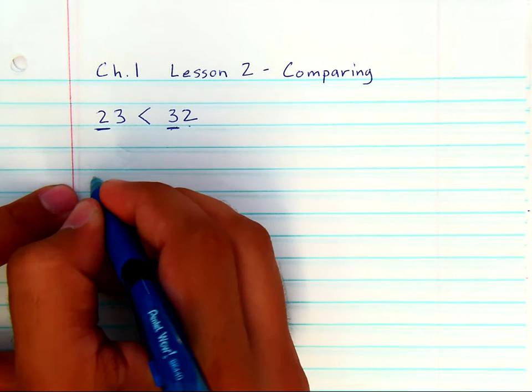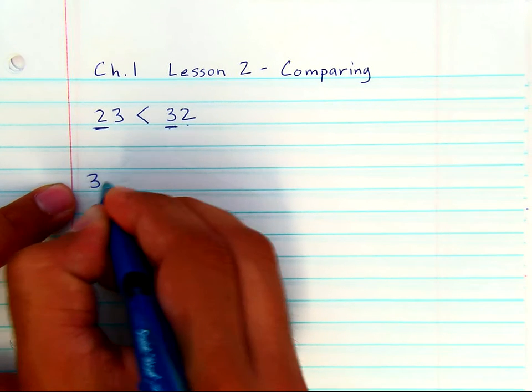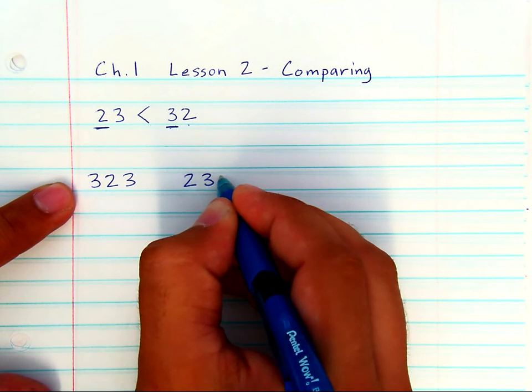Now, in third grade, you start dealing with three-digit numbers. So, 323 and 232.